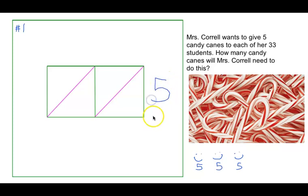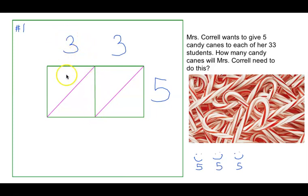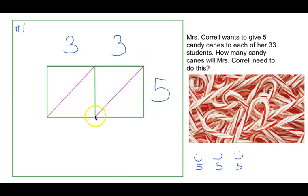We're going to write the number 5 here and the number 33 like this. The hardest part of this whole deal is drawing the boxes. Draw one rectangle and split it in half down the middle, so each three gets its own box. The five is going to hang out on the side. Now draw diagonal lines — just two of them — going from the upper right down to the lower left of each square.